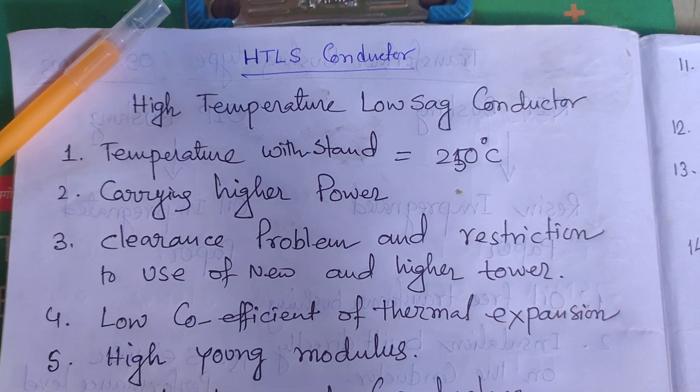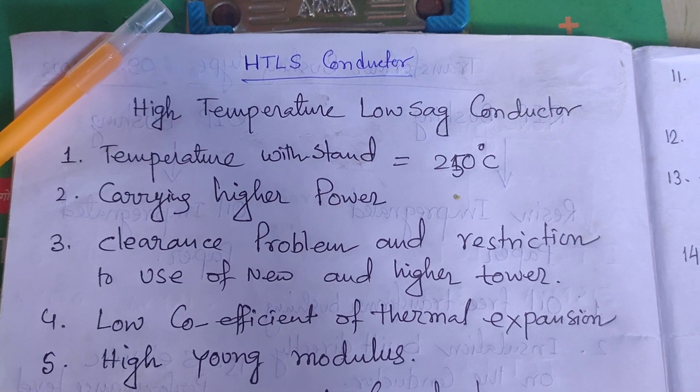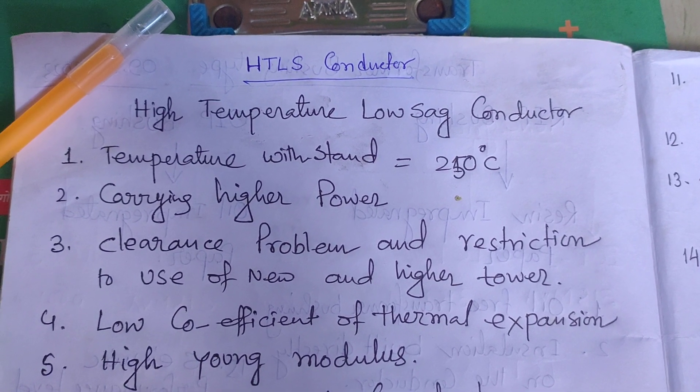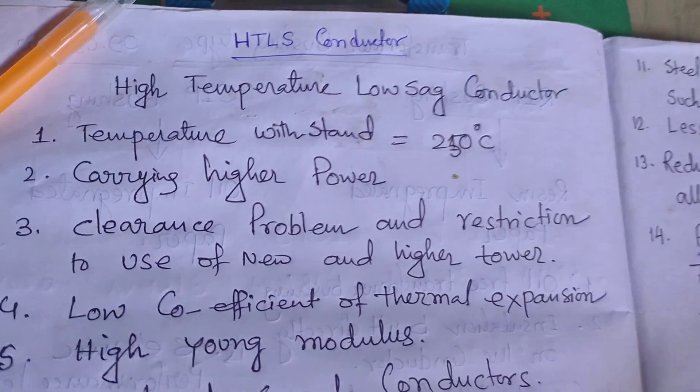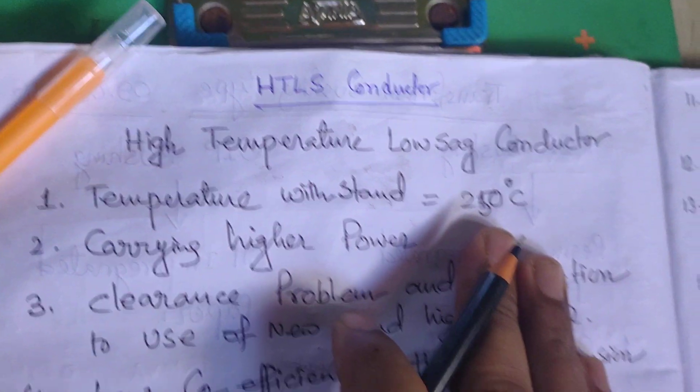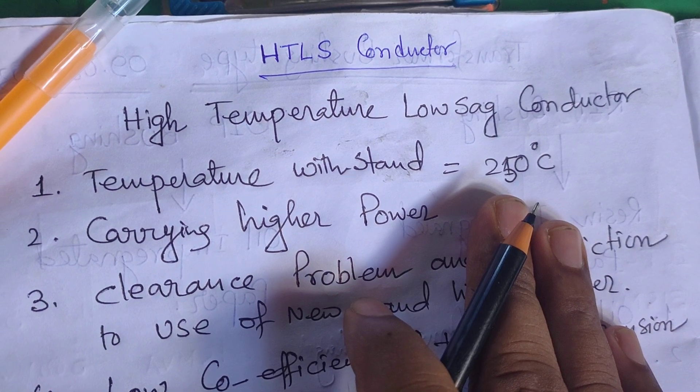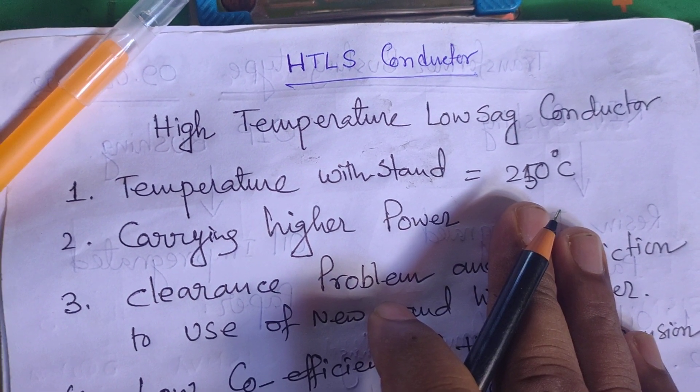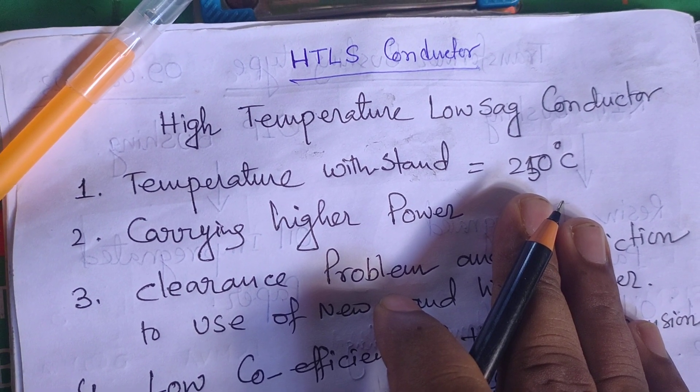Hi friends, today my topic is HTLS conductor. HTLS conductor stands for High Temperature Low Sag Conductor. Nowadays it is being used in transmission lines for various advantages, replacing the ACSR Zebra and ACSR Panther conductors as per requirements and situations.